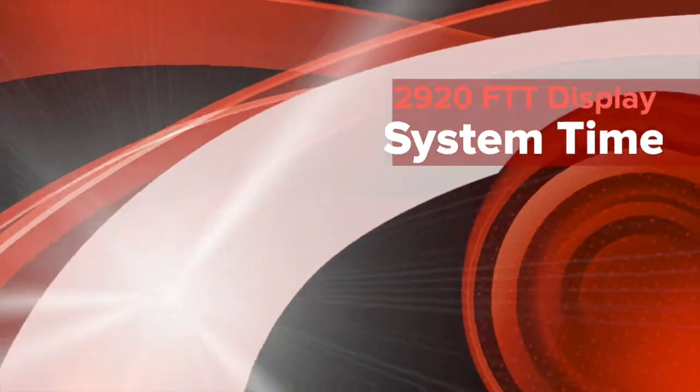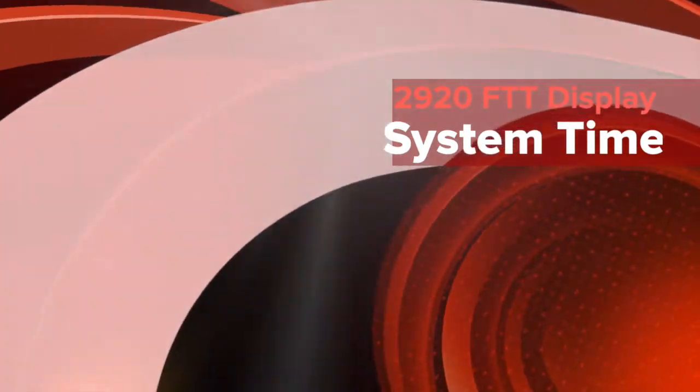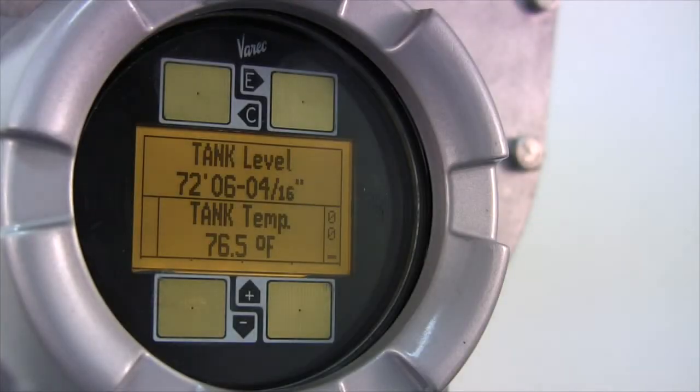You are watching part of a series of videos on the 2920 float and tape transmitter. This video explains how to configure an example system time parameter using the display interface. We will show you how to configure the time zone parameter, which is the only parameter in the system time you can modify.